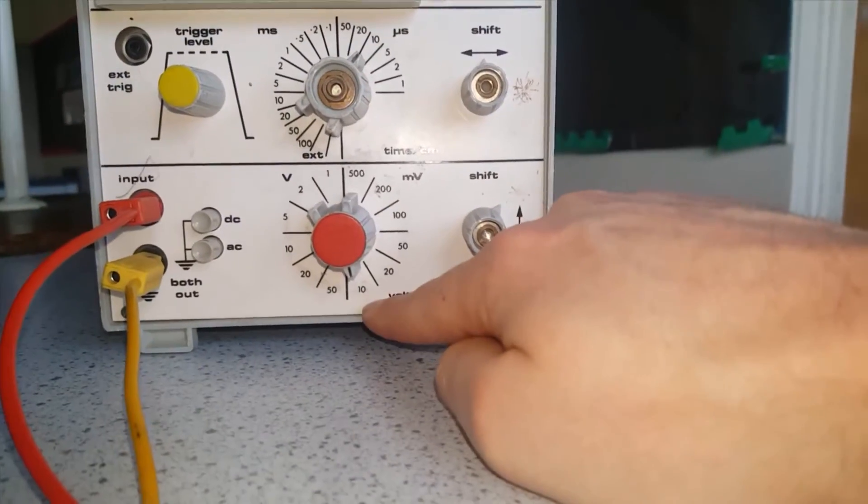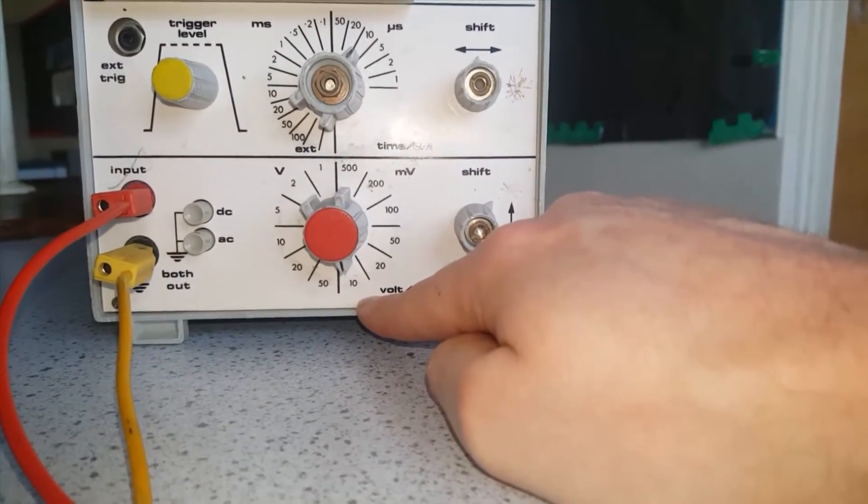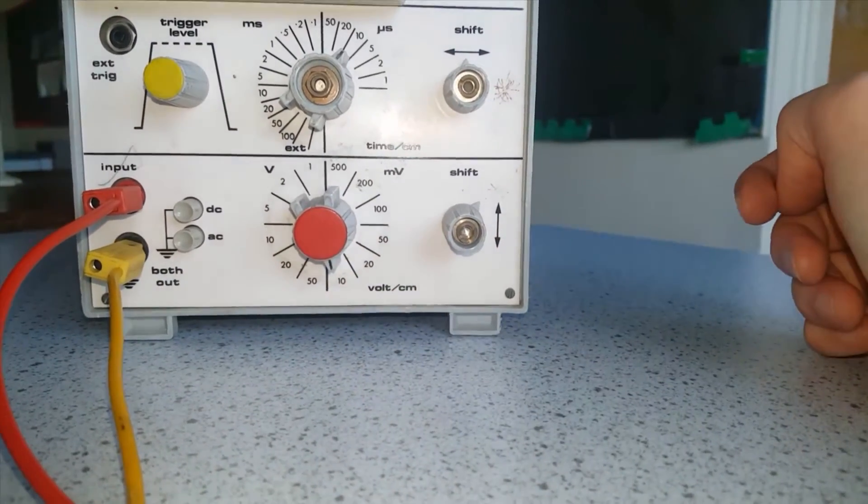So 2.8 multiplied by 10 millivolts will give us 28 millivolts.